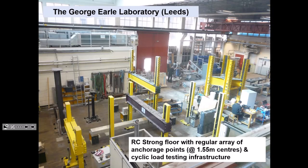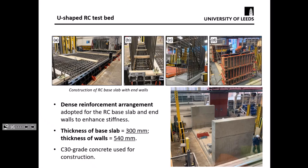This image shows the lab at the University of Leeds. It's quite large, with a reinforced concrete strong floor and a series of anchorage points approximately 1.5 metres apart, so we can perform a series of tests including static and cyclic tests. The first thing we had to do was construct the U-shaped reinforced concrete testbed, to ensure the bridge is restrained with no movements — especially from the backfill and from the sides — using a dense reinforcement arrangement. The thickness of the base was 300 millimetres, the walls were 540 millimetres, designed to C30 grade concrete.